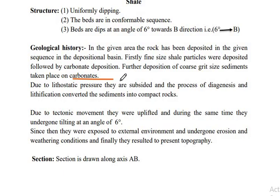Due to lithostatic pressure they were subsidized, and under the process of diagenesis and lithification the sediments converted into compact rocks like shale, limestone, and grit. Further, due to tectonic movement they were uplifted and during the same time underwent tilting at an angle of 6 degrees. Since then they were exposed to the external environment and underwent erosion and weathering, finally resulting in the present topography shown in the map and the section prepared along axis A-B.